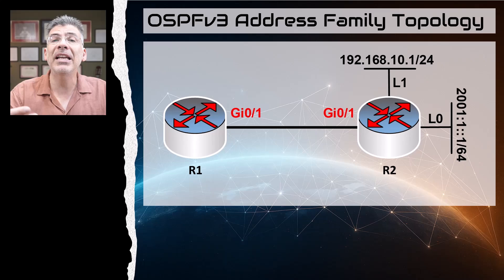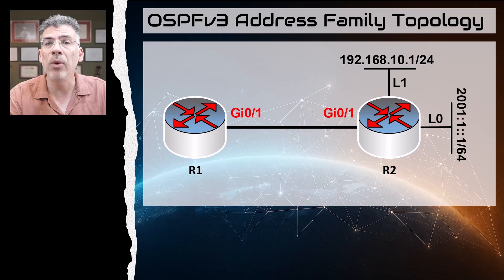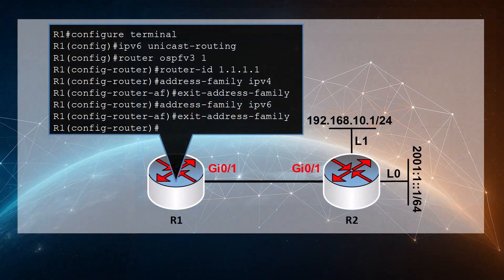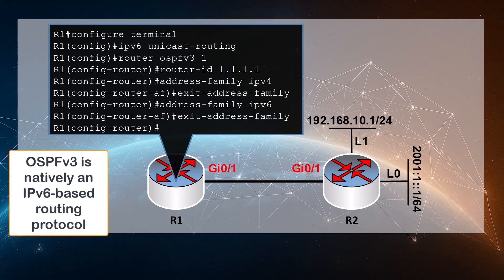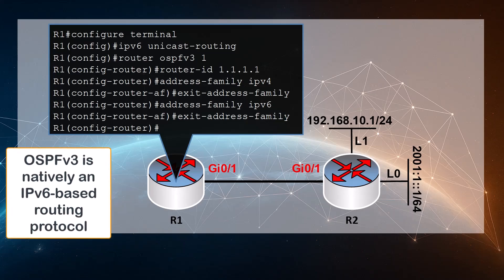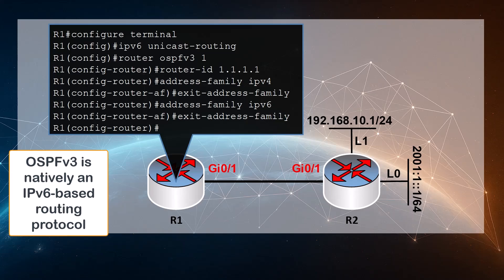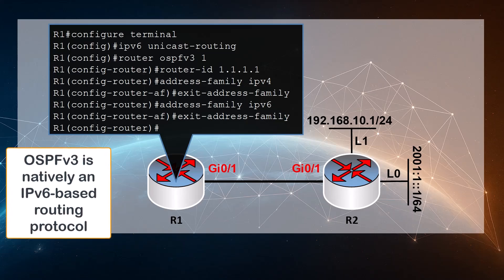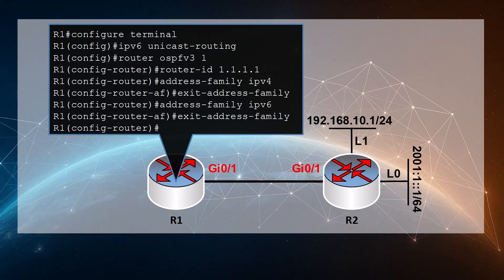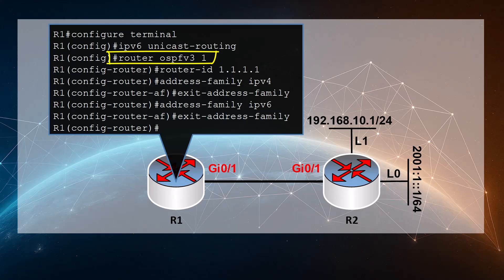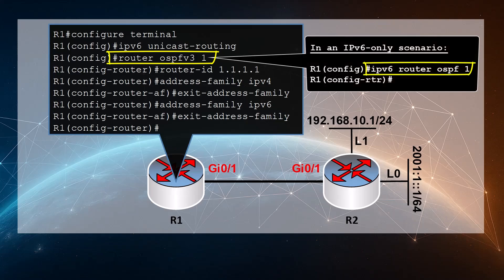Let's start by configuring IPv6 in both routers, beginning with R1. Remember, OSPF version 3 is natively an IPv6-based protocol, so it needs the underlying IPv6 functionality to operate correctly. We start by enabling IPv6 globally on the router. Next, we issue the 'router ospfv3 1' command. Note that this command is different from the 'ipv6 router ospf 1' command used in the previous video.